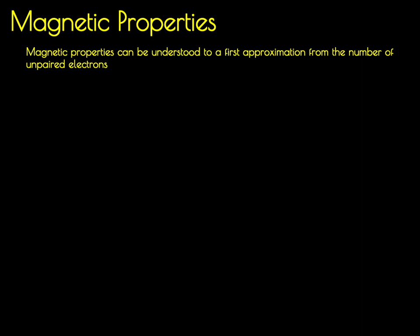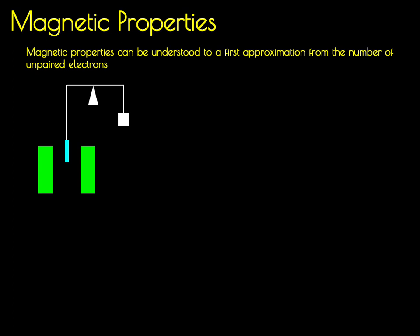In addition to the optical properties — the colors of these transition metal compounds — their magnetic properties can also be rationalized to a first approximation using a crystal field model by counting the number of unpaired electrons. One way to determine the number of unpaired electrons is by doing a magnetic measurement using a magnetic susceptibility balance, from which you derive the magnetic moment for a molecule. A magnetic susceptibility balance has an electromagnet that you can turn on and off; you place the sample between the poles of the magnet and measure whether it is attracted to or deflected from the magnetic field. We're going to look at what happens under two different situations: a diamagnetic or a paramagnetic compound.